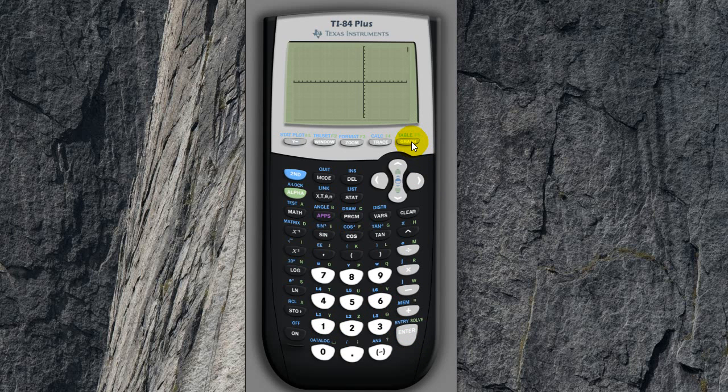Then when you graph it, you can go to second, trace, value, and put in negative 15. It will tell you when x is negative 15, y is 49.